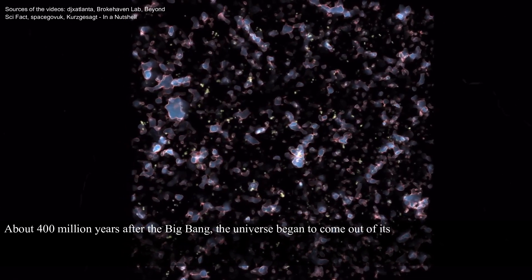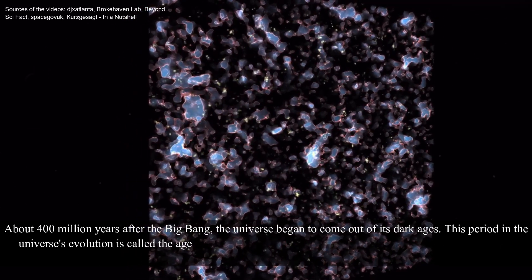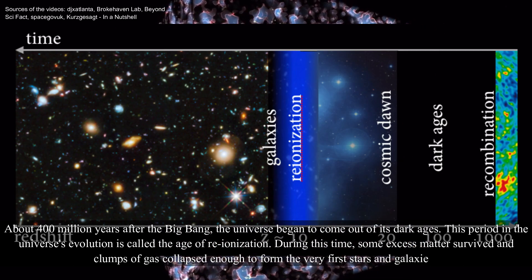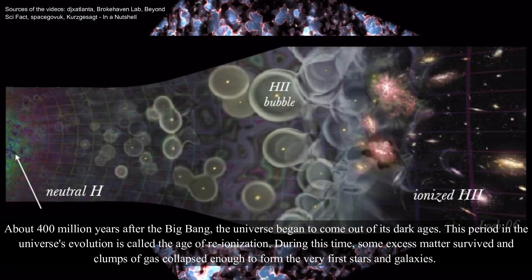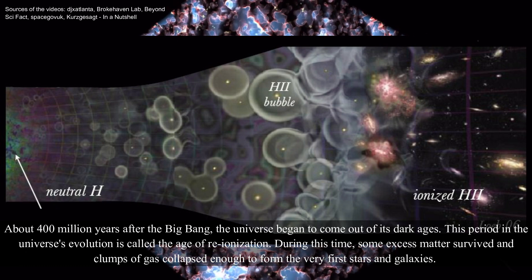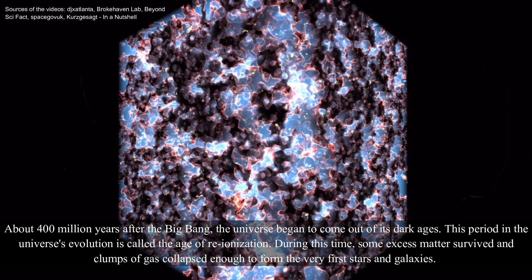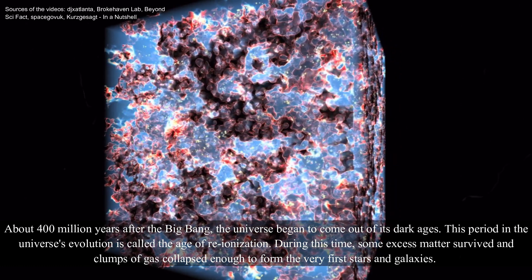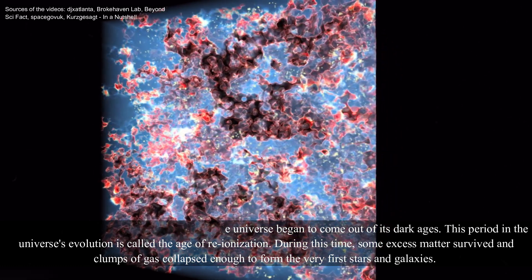About 400 million years after the Big Bang, the universe began to come out of its dark ages. This period in the universe's evolution is called the Age of Reionization. During this time, some existing matter survived and clumps of gas collapsed enough to form the very first stars and galaxies.